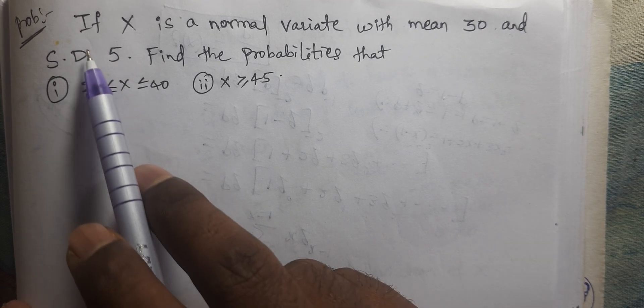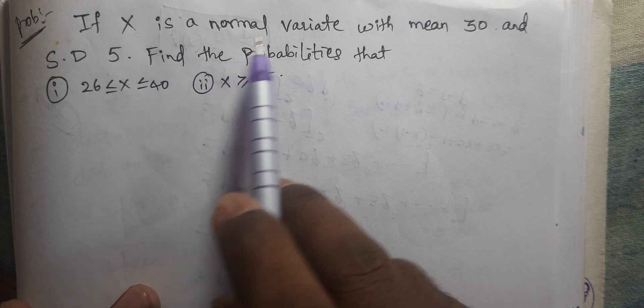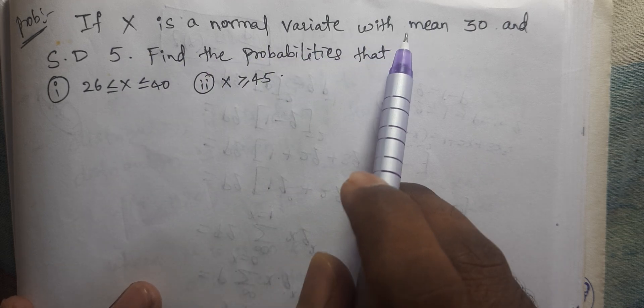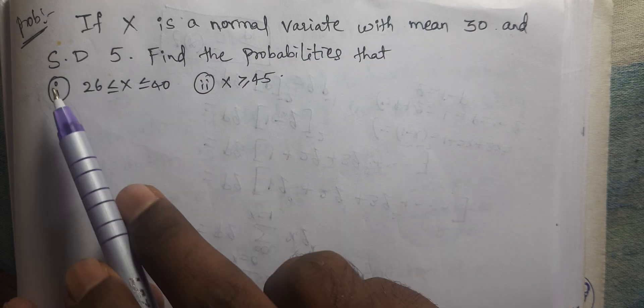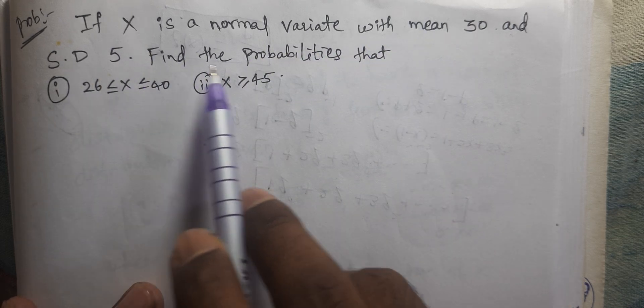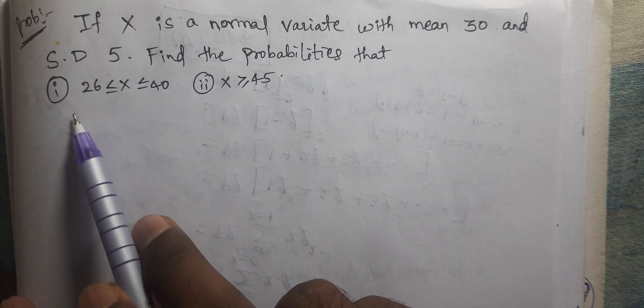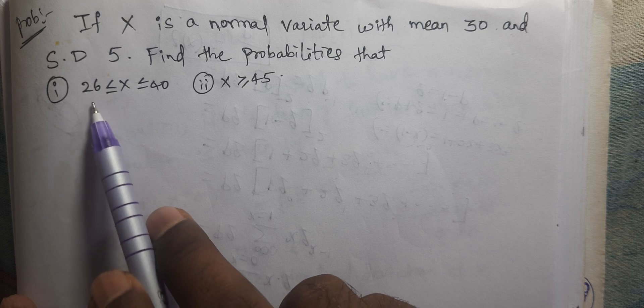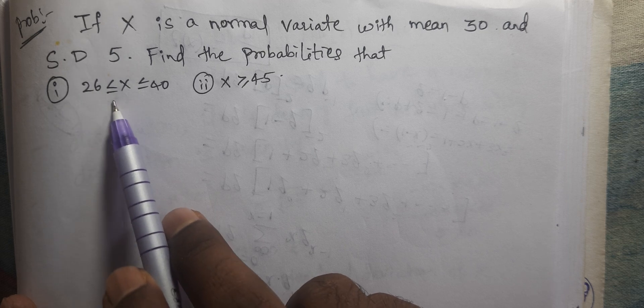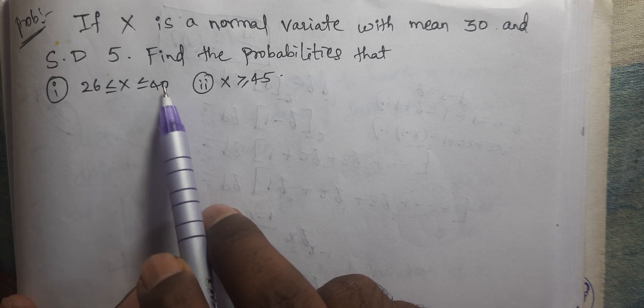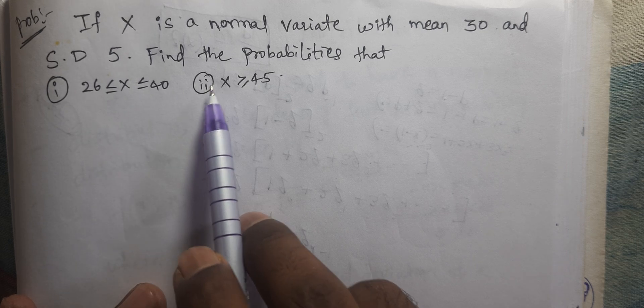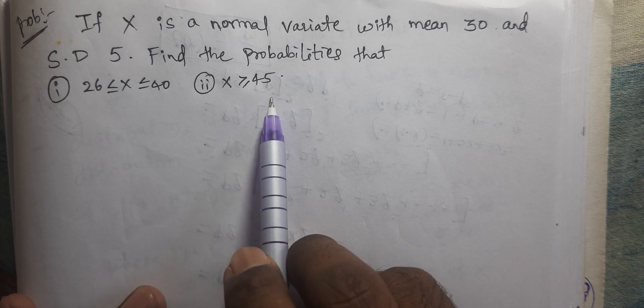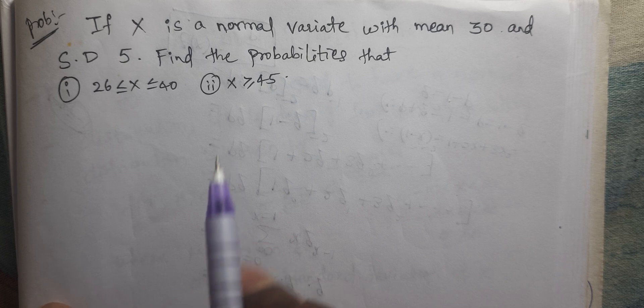See here, if capital X is a normal variate with mean 30 and standard deviation 5, find the probability that: Roman number 1, 26 less than or equal to X less than or equal to 40; Roman number 2, X greater than or equal to 45.